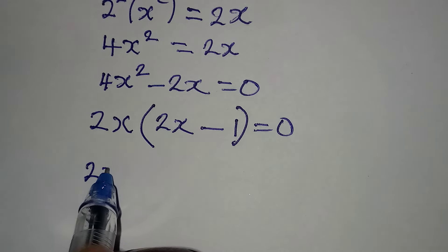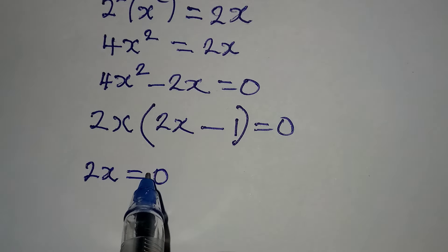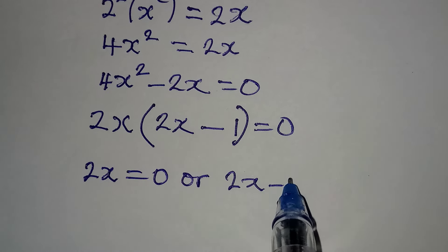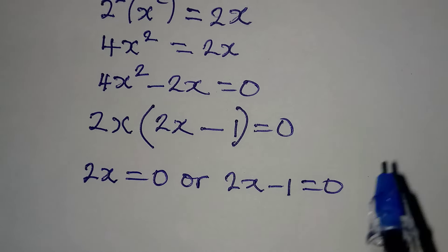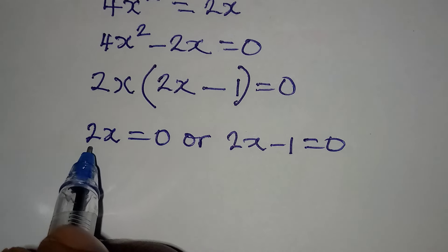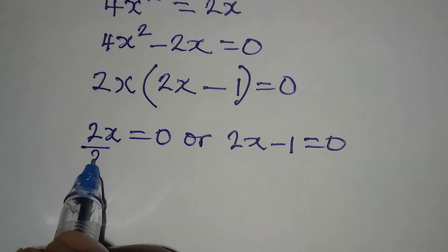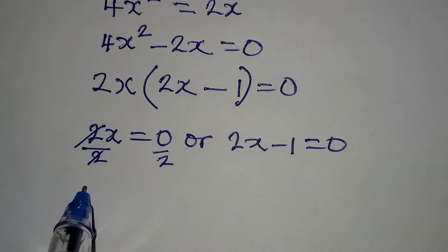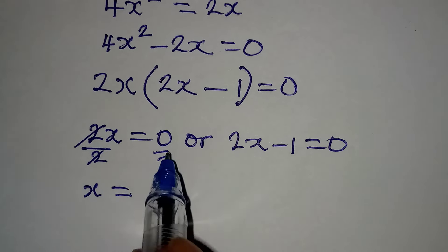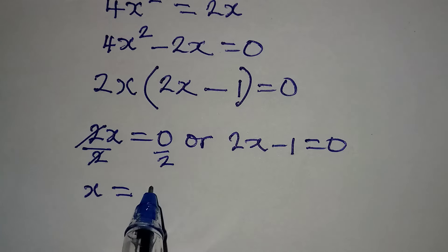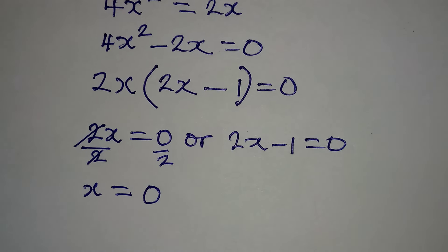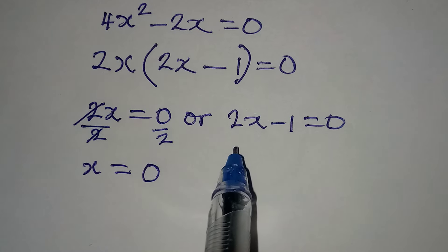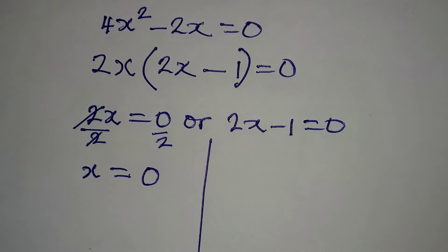Applying the zero product rule, either 2x equals 0 or 2x minus 1 equals 0. From the first factor, 2x equals 0, and dividing both sides by 2 gives x equals 0.